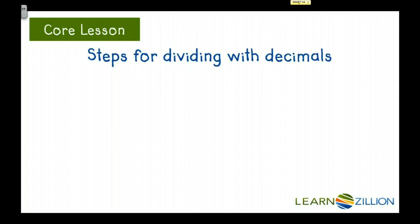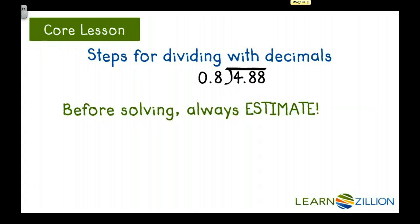Let's get into the steps for dividing with decimals. Here we have an example of 0.8 divided into 4.88. Before we can actually solve this problem, we should always estimate to make sure that we're in the right ballpark.